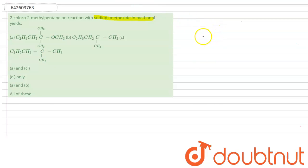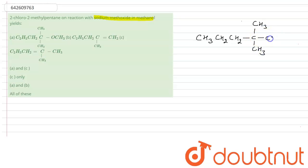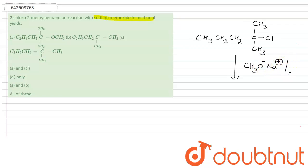Let's draw 2-chloro-2-methyl pentane: that is CH3–C(Cl)(CH3)–CH2–CH2–CH3. So this is 2-chloro-2-methyl pentane. The reagent we have used is sodium methoxide, that is CH3O⁻ Na⁺, in methanol (MeOH).